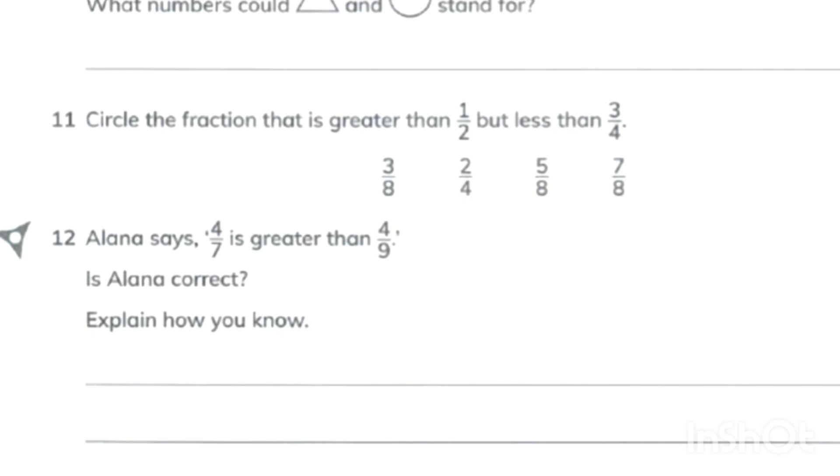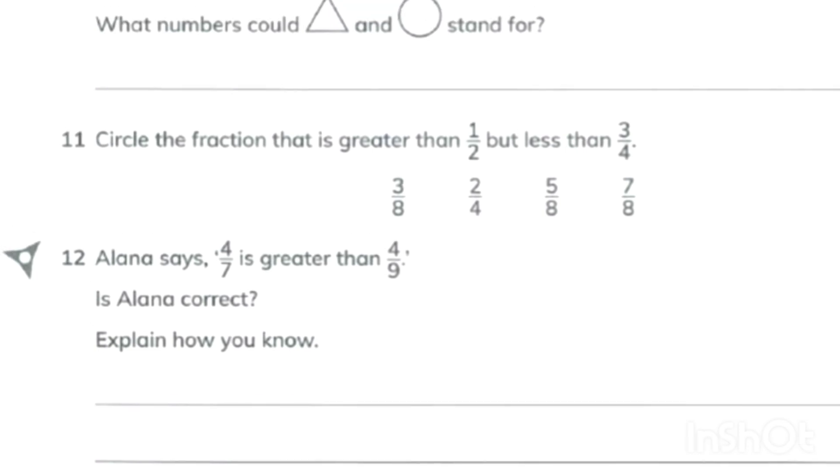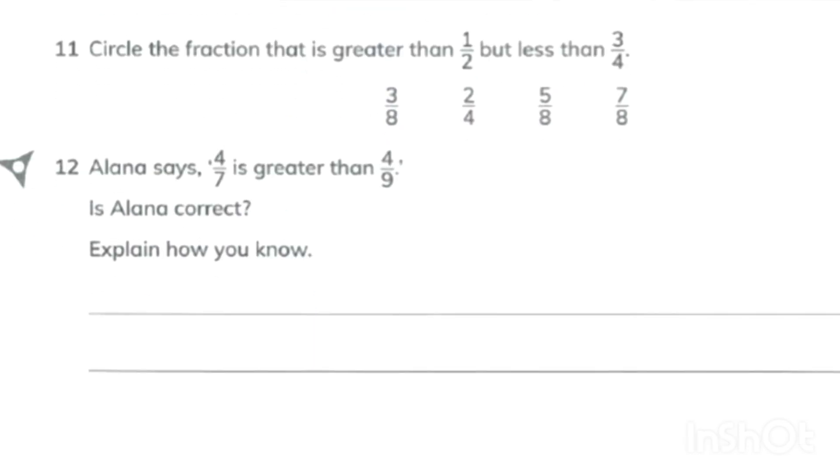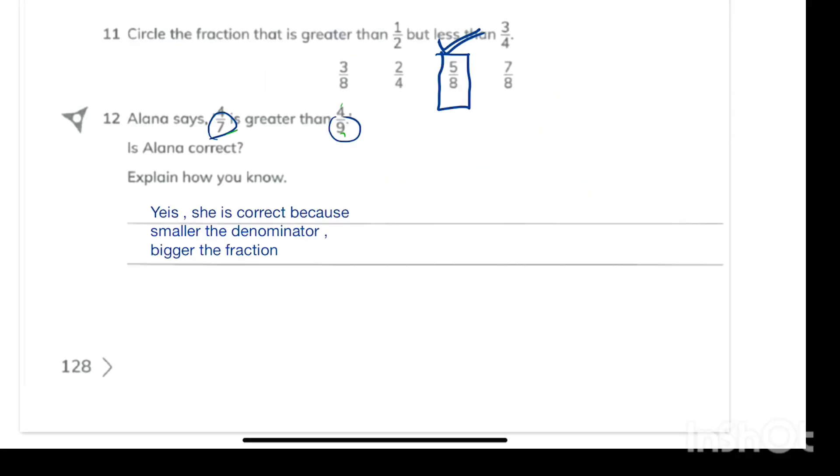I have 3 denominators with number 8 so I will change my rest of the 2 to 8 by multiplying by number 2. 5 upon 8 is the correct option.